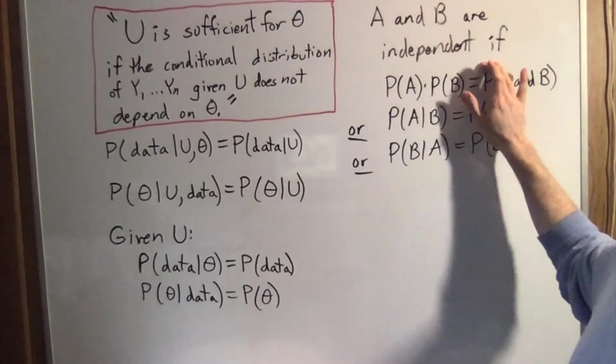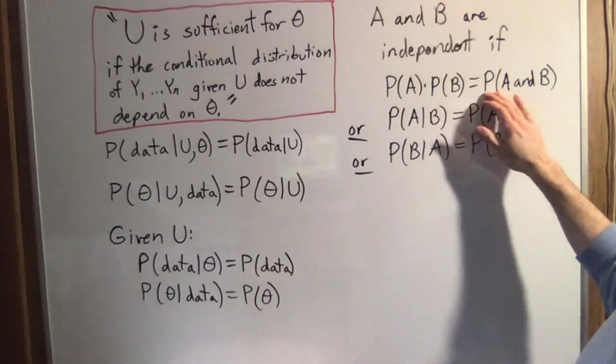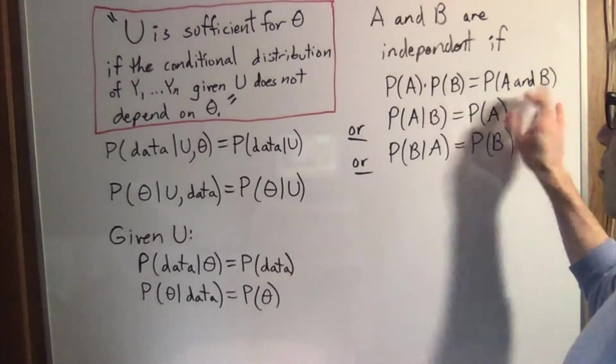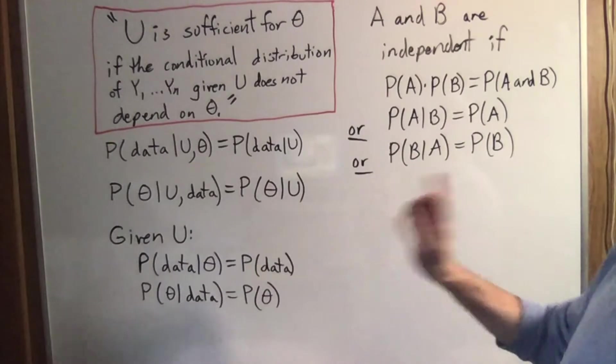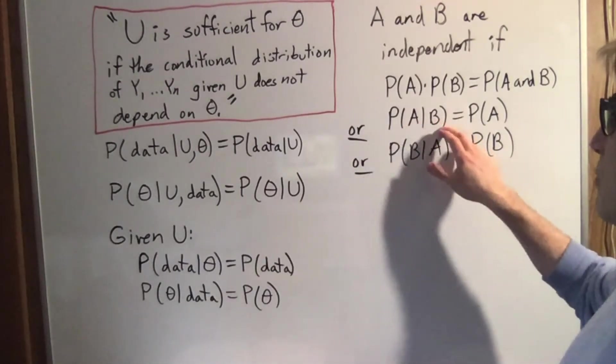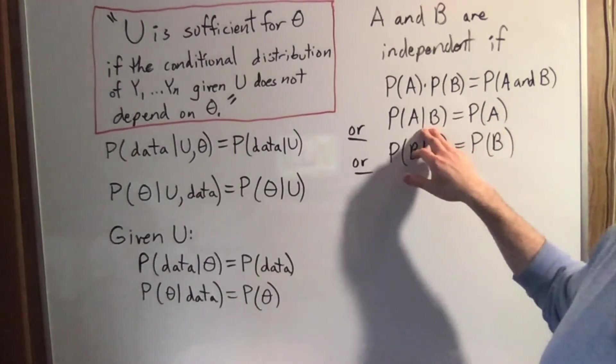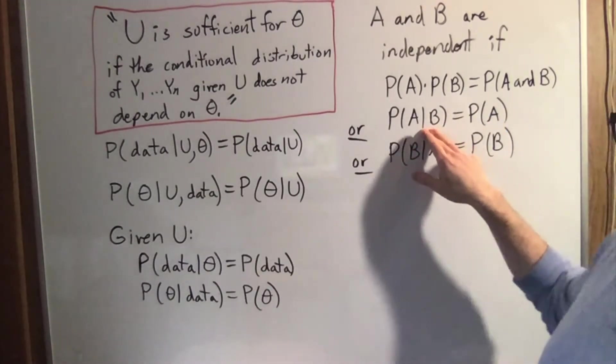A and B are independent if the probability of A times the probability of B is the probability of A and B. But there's two other ways to say that. You can also say the probability of A given B is the probability of A. In other words, B doesn't matter when you're figuring out the probability of A.